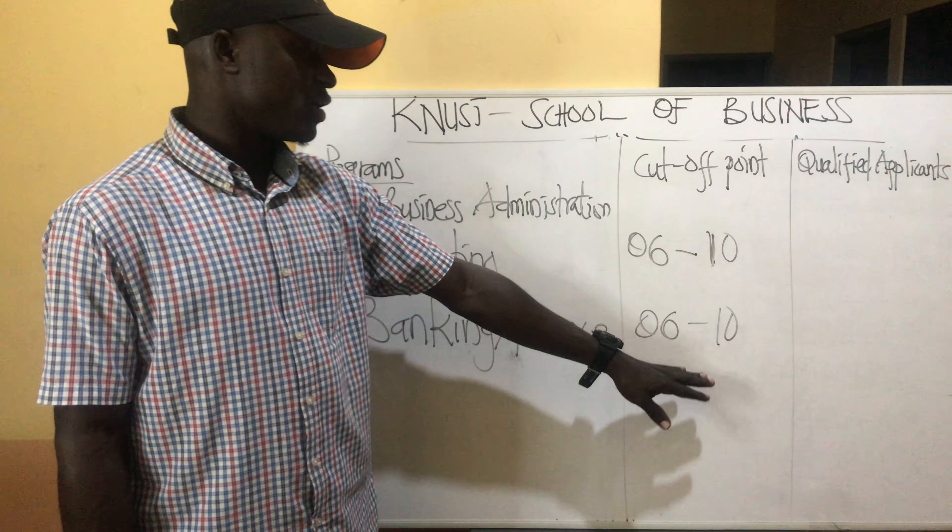Now let's look at the qualified applicants — those who qualify to be admitted. First, we have SHS graduates, including those who are about to complete SHS. Those who have completed SHS can apply. Check the cut-off point and then apply. Get your Maths and English — Math and English are compulsory, please get them. Then you choose between your social and science subjects.